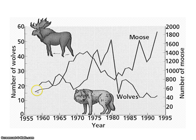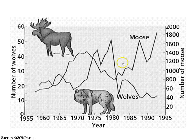You'll see here the moose start kind of low, then as they start to increase, the wolves are starting to increase too. And as moose decrease, then the wolves decrease. It just fluctuates, going up and down and up and down. When it's not exactly the same, there is some lag time in there.